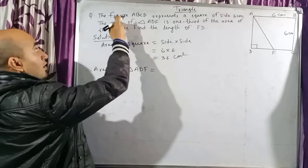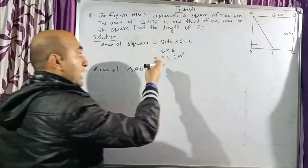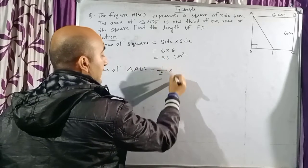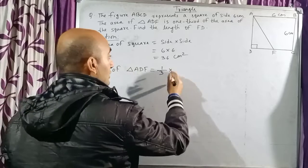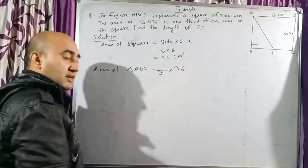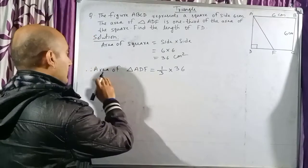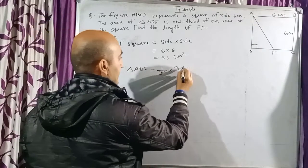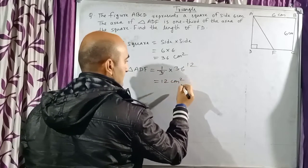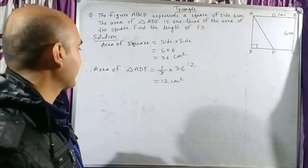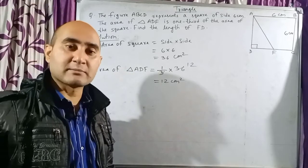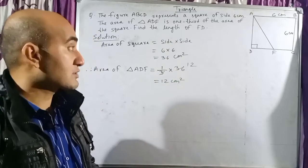Therefore, the area of triangle ADF is one-third of the area of the square. That means we multiply one-third by 36. We can cancel to get 12. So the area of triangle ADF is 12 centimeters square.